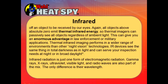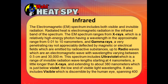Infrared radiation is just one form of electromagnetic radiation — gamma rays, x-rays, ultraviolet, visible light, and radio waves are also part of the mix. The only difference is their wavelength. The electromagnetic spectrum ranges from x-rays, which are relatively high-energy photons with wavelengths in the approximate range of 0.01 to 10 nanometers; gamma rays, penetrating rays emitted by radioactive substances; up to radio waves, which are electromagnetic waves with wavelengths varying between 0.5 centimeters all the way up to 30,000 meters.